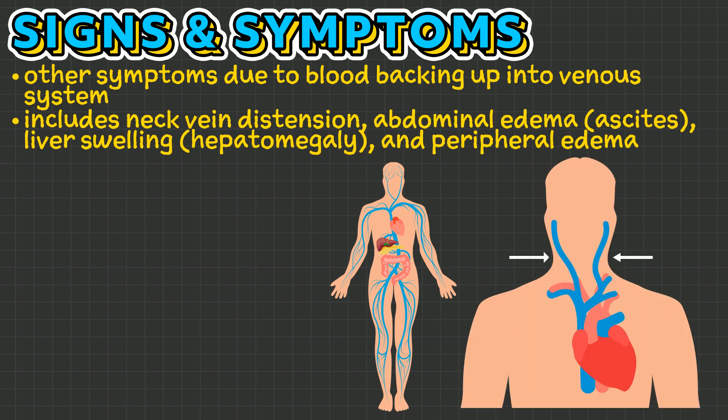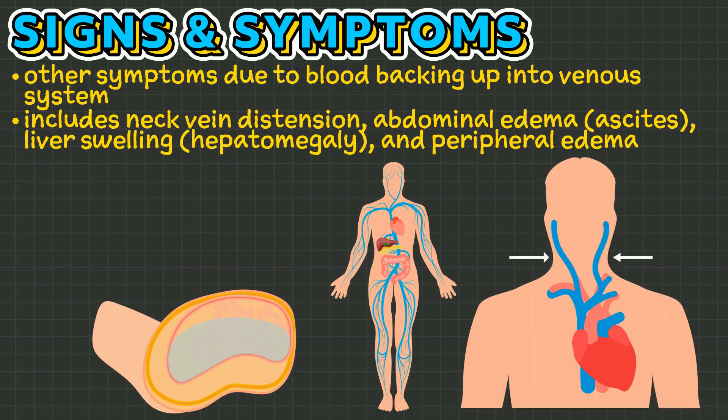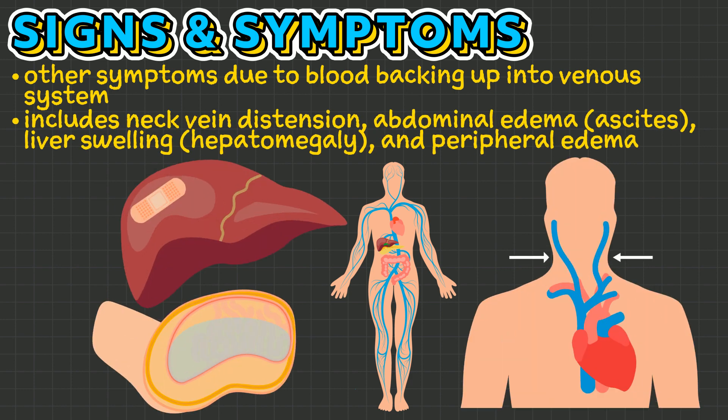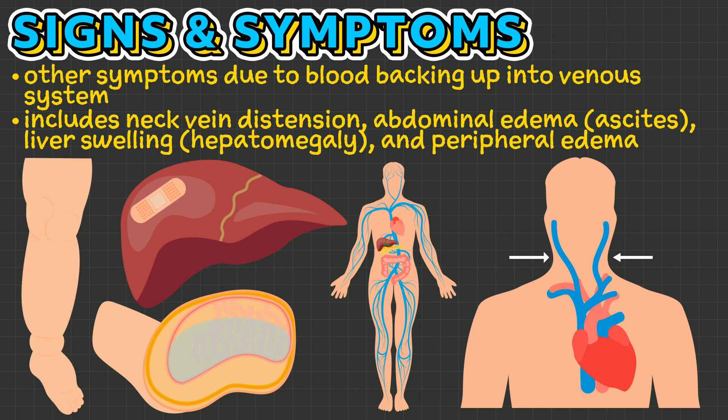Other symptoms due to blood backing up into the venous system may also occur, including neck vein distension, abdominal edema or ascites, liver swelling or hepatomegaly, and peripheral edema.